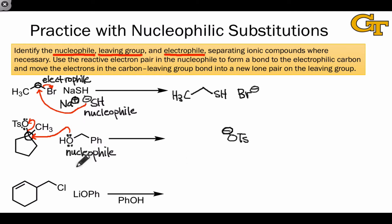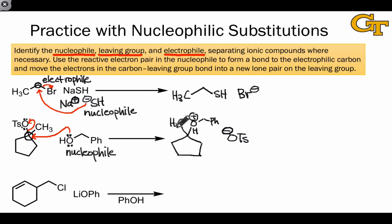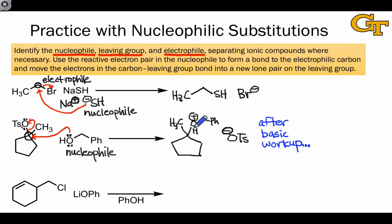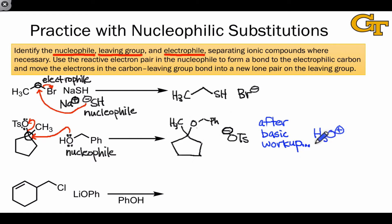Notice that the nucleophile is neutral, which means the immediate product of substitution should contain a positive charge, since the charge of the nucleophile increases by one unit after donating a pair of electrons. The intermediate immediately following these curved arrows is cationic. In practice, workup typically removes this positive charge, often via basic aqueous workup. After treating with aqueous base, we deprotonate the most acidic position — the positively charged oxygen — and we're left with a neutral product: a new ether. The byproduct of aqueous workup is H3O+.